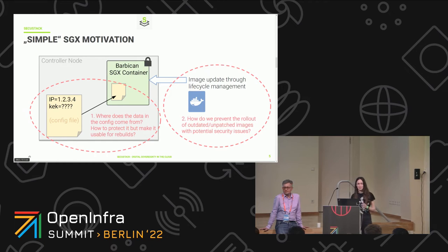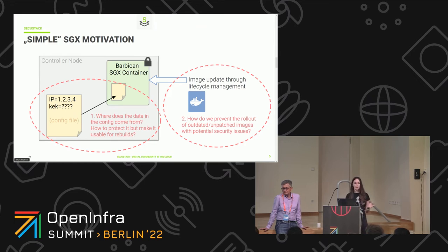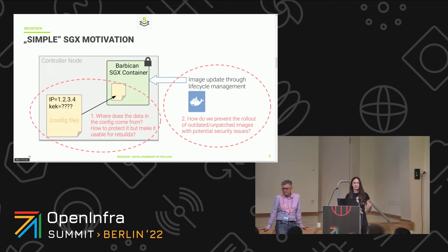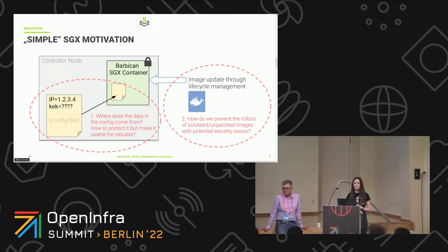While we had some pain putting Barbican in an SGX container, that was only one part. Our main pain with putting Barbican — or any other OpenStack service, like Keystone, or Nova which we're currently working on — into an SGX container was the forking of processes. This leads to a lot of processes that should be executed in an enclave, but that's way too much. After we got that worked out for Barbican, we had two other open questions.